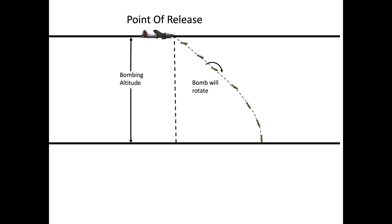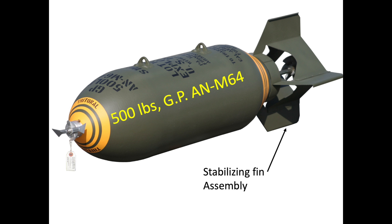Each bomb type will have a consistent ballistic coefficient. The bomb's stabilizing fin keeps the bomb from unpredictable tumbling. A bomb's horizontal speed will match the bomber speed at bomb release. The aerodynamic drag slows the bomb's speed.